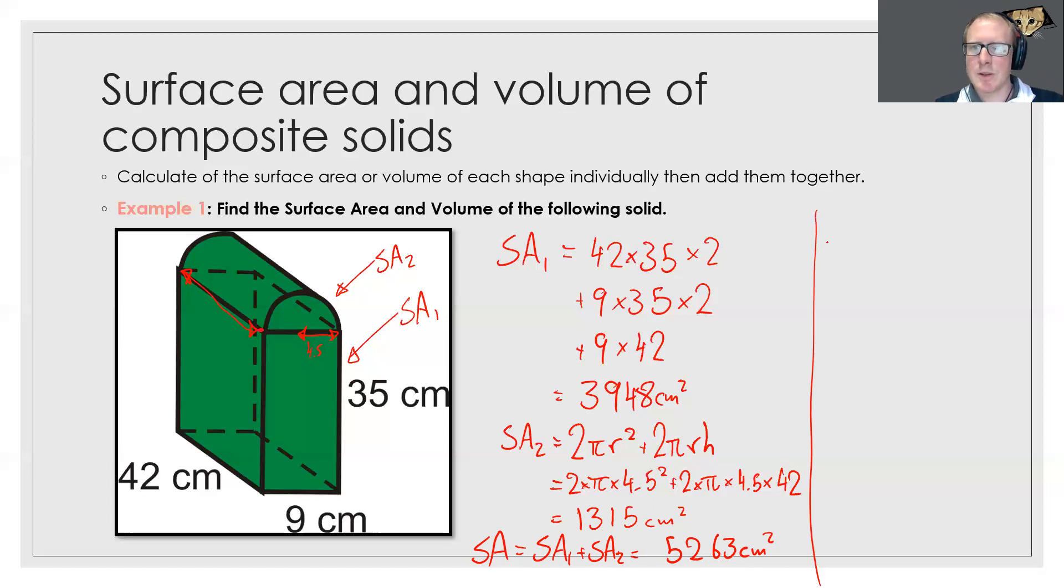Now that's our surface area. Our volume is the same thing. We're going to call this one volume 1 and this one volume 2. Now volume 1 is just the front area which is 9 times 35 times by how far back it goes which is 42.